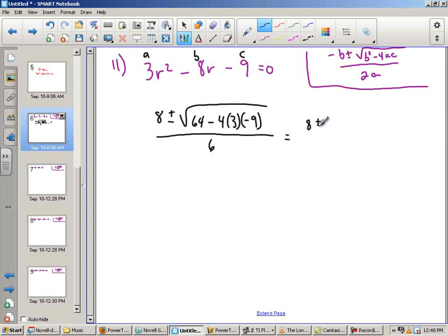So it's 64 minus 4 times 3 times negative 9. What I do, I get 172. That's fine. Set that away for a second.